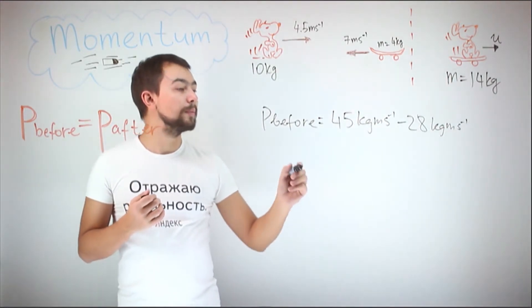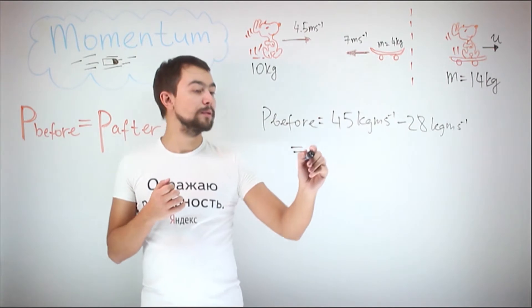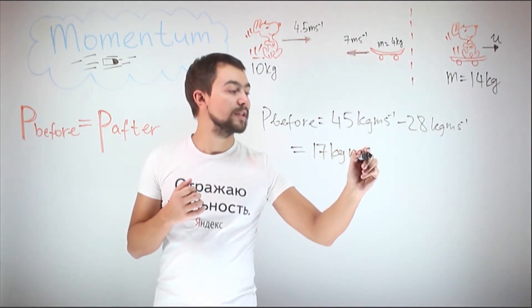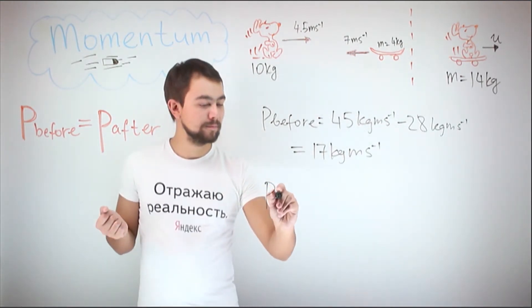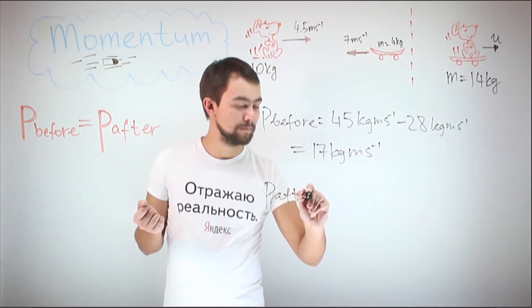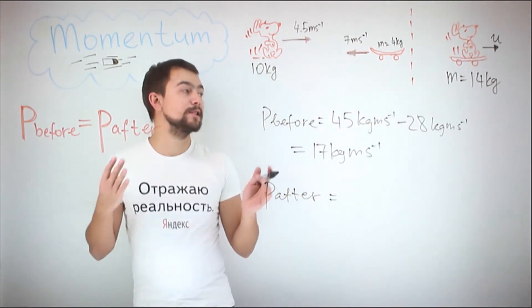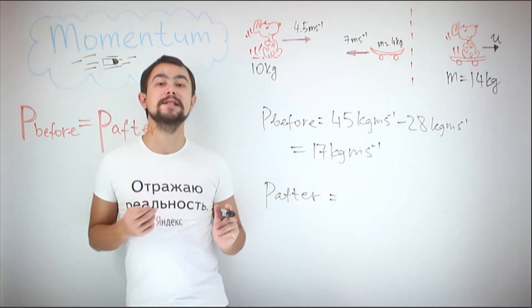So the total momentum before the collision is equal to 17 kilogram meters per second. So, momentum after the collision is equal to mass times velocity. The combined mass of Snoopy and the skateboard is 14 kilograms.